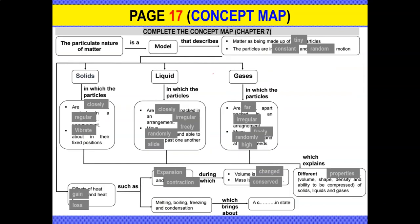Please turn to page 17 of your notes, the concept map. We're going to focus at the bottom portion. When a substance gains heat or loses heat, melting, boiling, freezing, and condensation can be placed — these will bring about changes in state. Please take this down and fill in the blanks in your notes. You can pause the video anytime you want.